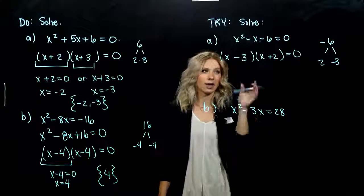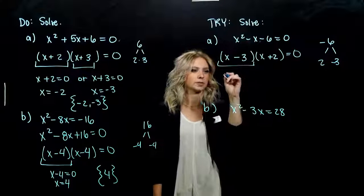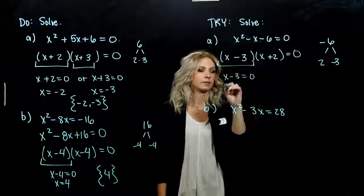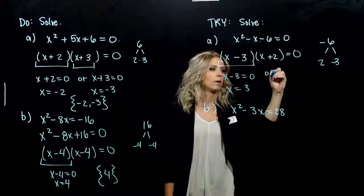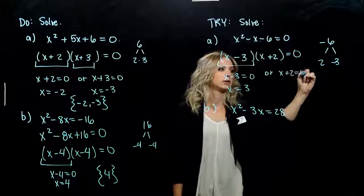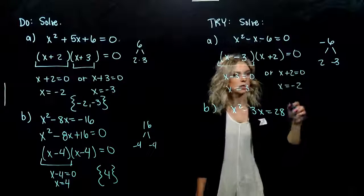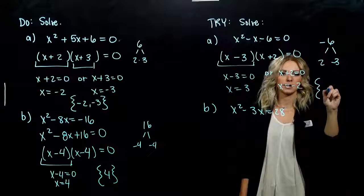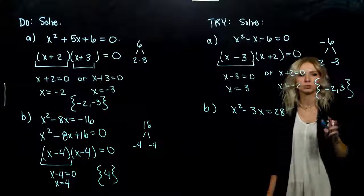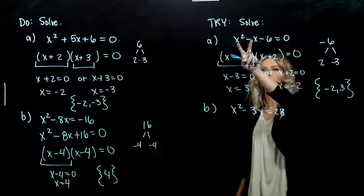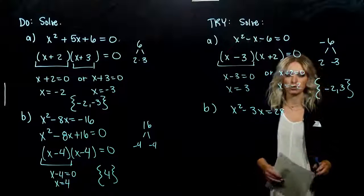Now we have quantity times quantity equal to 0. Either the first piece is 0, meaning x equals 3, or the second piece is equal to 0, which tells us x equals negative 2. So our solution set is negative 2 or 3. We can plug in either of those to check and make sure we make our original equation true.